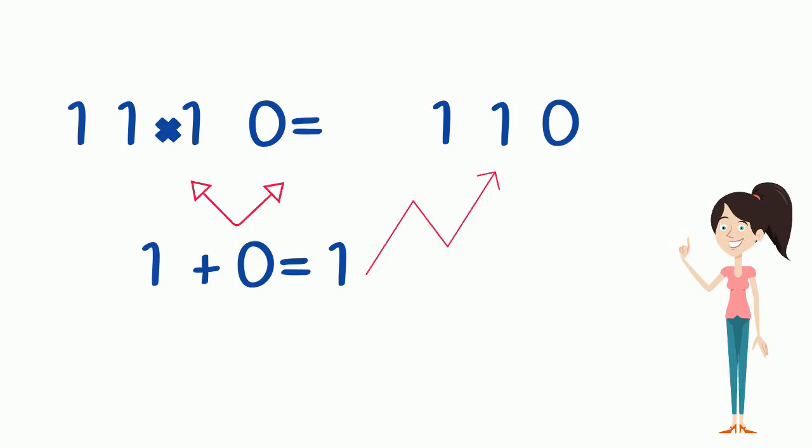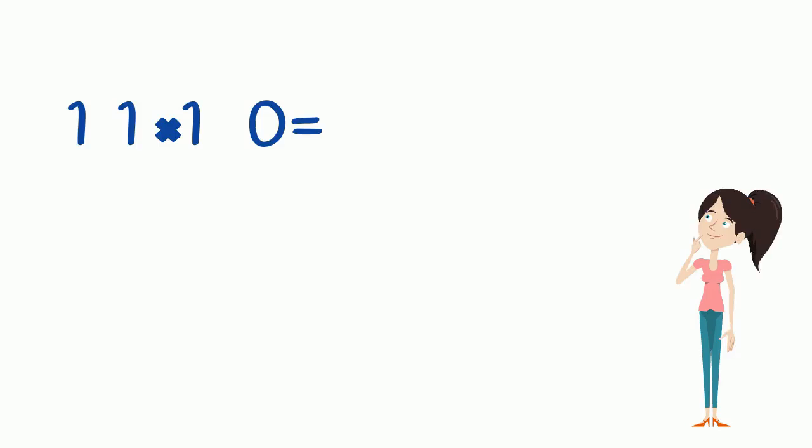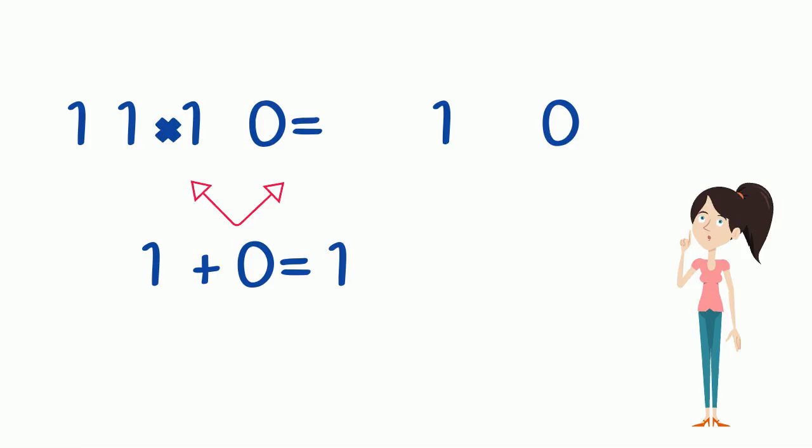So in this example, 11 times 10. I'll write number 10 and leave a gap in between the two digits. Then I add 1 and 0 together which equals 1, and I'll put that 1 right in the middle of the two other digits. So the answer is 110.